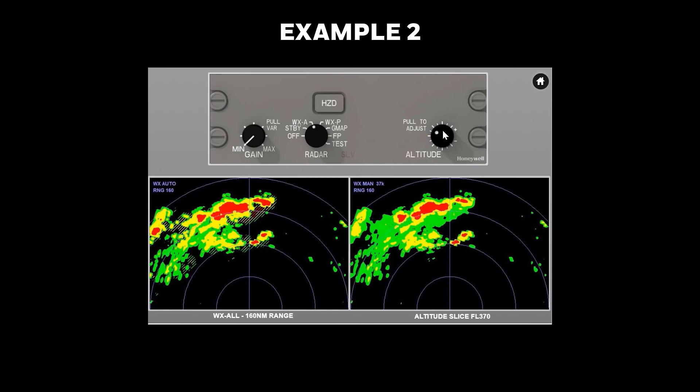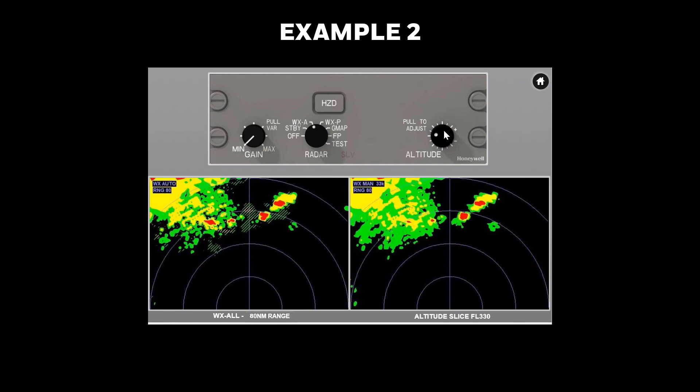The line is now just outside 80 nautical miles, and the aircraft has climbed to flight level 420. Again, the auto mode alone might be interpreted to indicate there is no path through. Looking at an altitude slice at flight level 400, the analysis shows that most of the action is to the right of track, and the potential path through is persisting. The cells in this example are now at 60 nautical miles, and looking at an altitude slice at flight level 330,